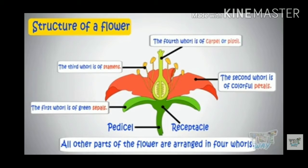Next are the four whorls of a flower. First, a green leaf-like structure which is known as sepals. Second, the colorful, attractive part which attracts insects for the process of pollination, which are called petals. Then the male reproductive part which is known as stamen. And the fourth whorl or part of a flower is the female part, which is pistil.